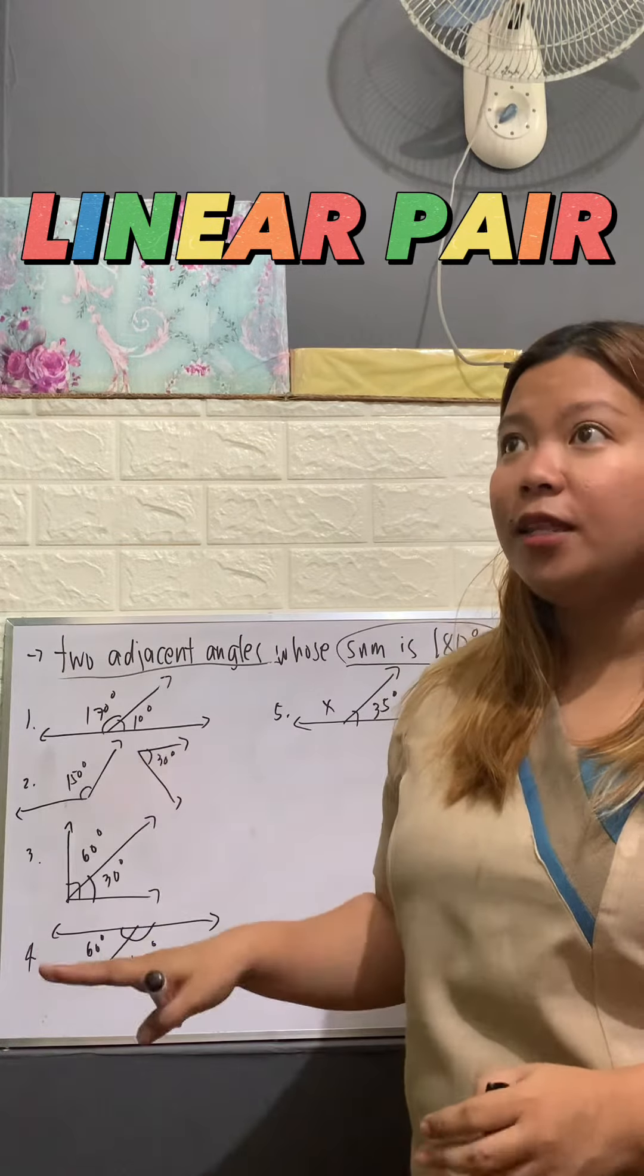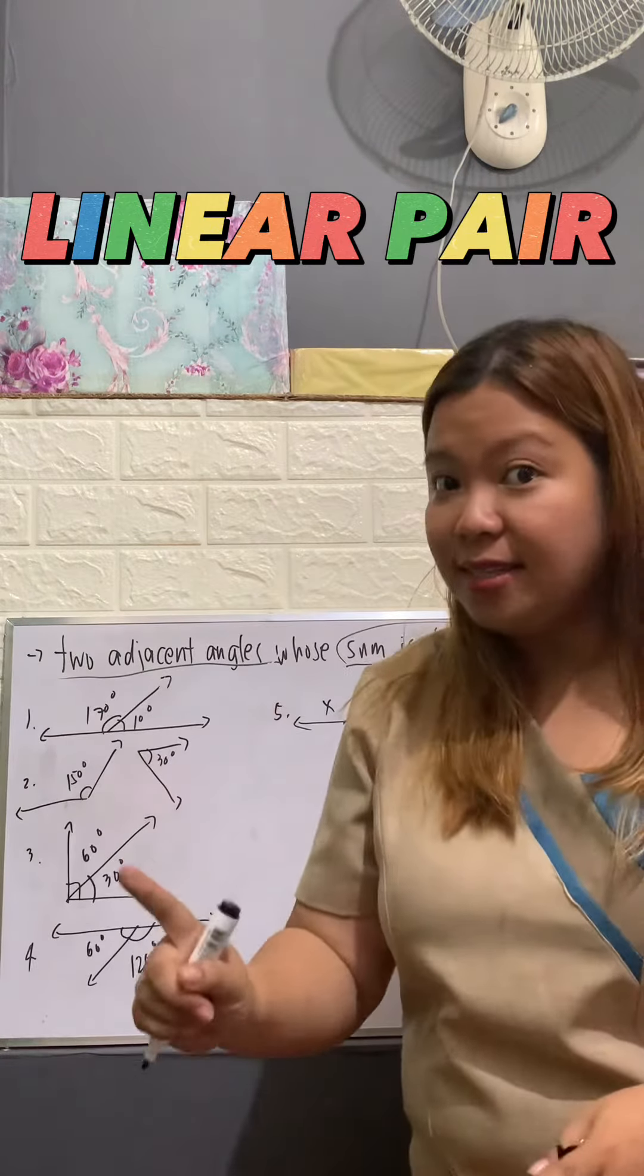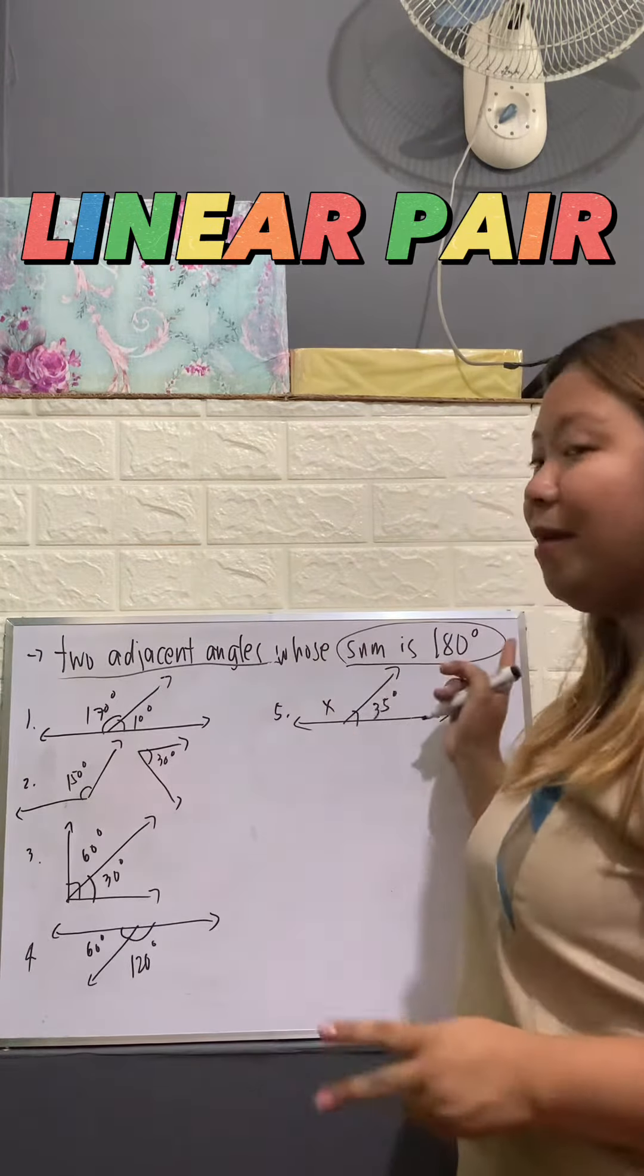In order for us to consider that the pair of angles is linear pair, it should be adjacent first and it should be supplementary.